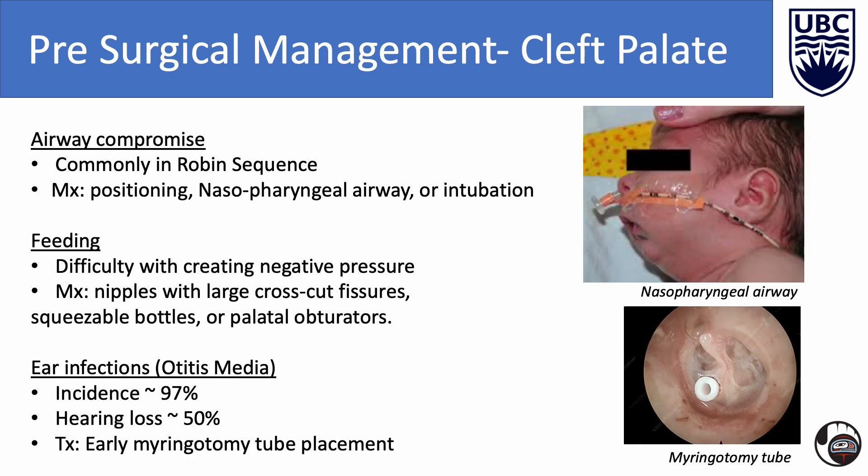The pre-surgical management of cleft palate patients will focus on airway management, feeding, and hearing loss. Airway compromise is rare but commonly seen in Pierre Robin sequence. The degree or severity of airway compromise will dictate the intervention, which can include lateral or prone positioning, a nasopharyngeal airway, or endotracheal intubation. A cleft palate hinders the creation of negative pressure essential for effective suction, thereby causing feeding difficulties in infants. Treatment strategies include the use of nipples with large cross-cut fissures, squeezable bottles, or palatal obturators to facilitate easier feeding. The incidence of otitis media in patients with cleft palate is 97%, and the incidence of hearing loss is nearly 50%. Early myringotomy tube placement is highly recommended, as it may be associated with improved hearing and speech outcomes.